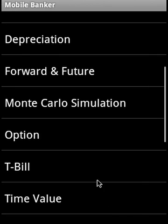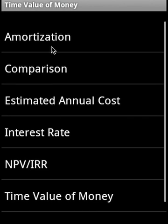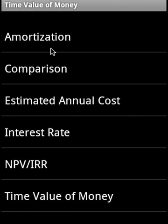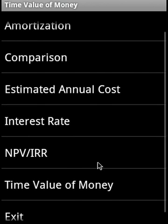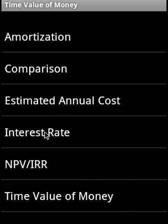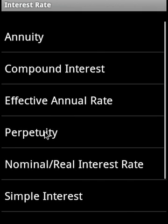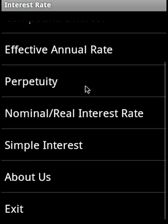In T-bill, we calculate the T-bill price, discount yield, and T-bill equivalent rate. In time value, we cover amortization, loan comparison, effective annual cost, interest rate, NPV, IRR, and time value of money.